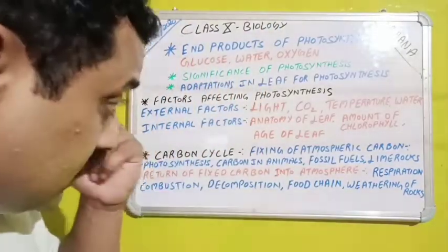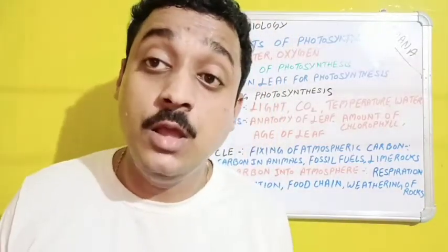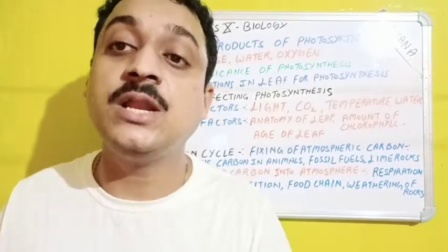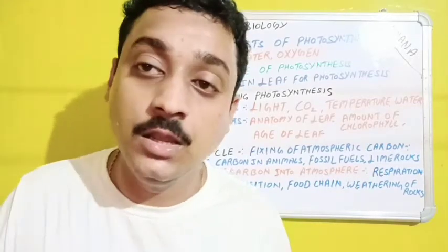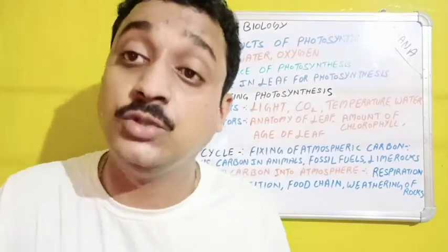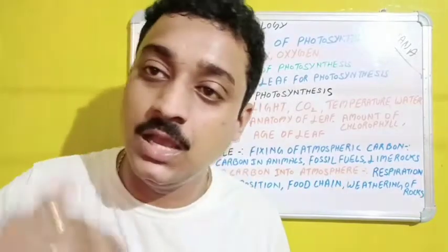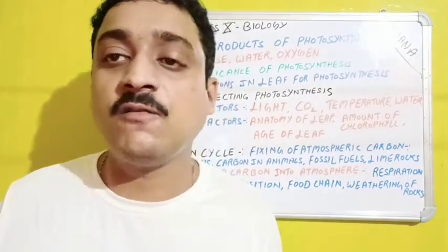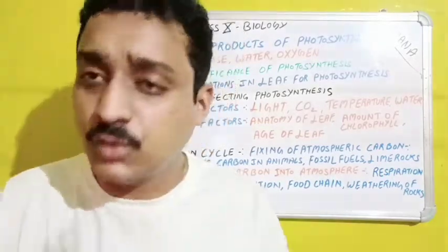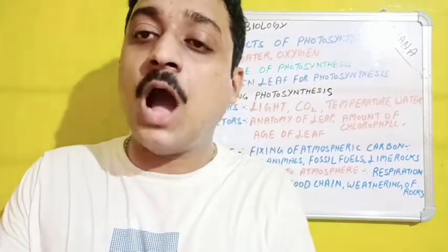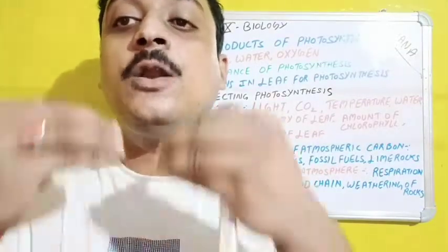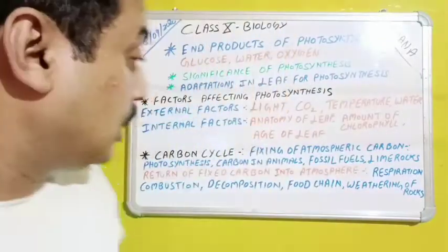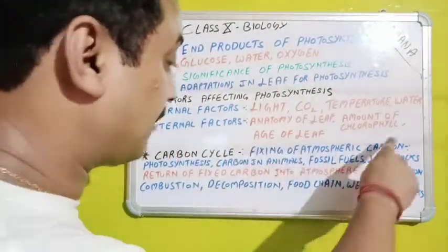The carbon cycle is one of the most important parts related to photosynthesis. A cycle means taking something from nature and returning it — just like the water cycle. The carbon cycle involves how much carbon living organisms take in and how much they release, keeping a balance. To understand it, we follow two points: fixing of atmospheric carbon, and return of fixed carbon into the atmosphere.